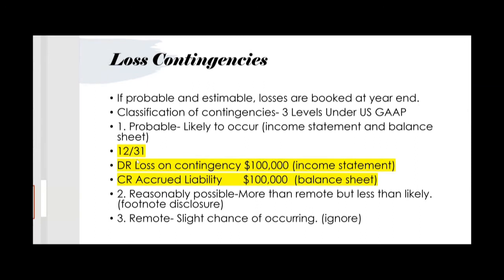On the audit exam, if you determine a company should have booked a contingent loss of, say, $100,000 but failed to do so, you'd see $100,000 of expense left out — expenses would be understated and net income overstated. Also, the $100,000 accrued liability would be missing, current liabilities would be underreported, and working capital — current assets minus current liabilities — would be overstated by $100,000.